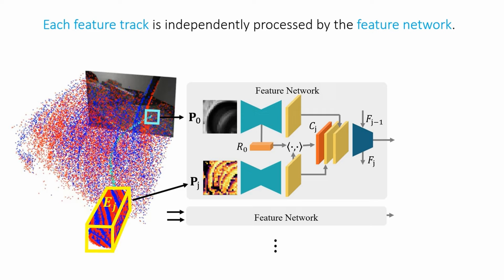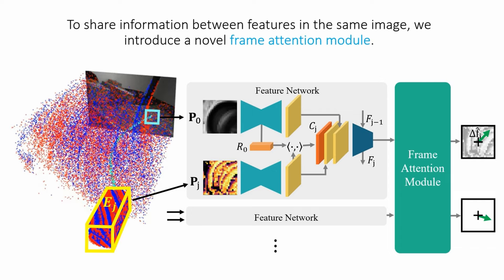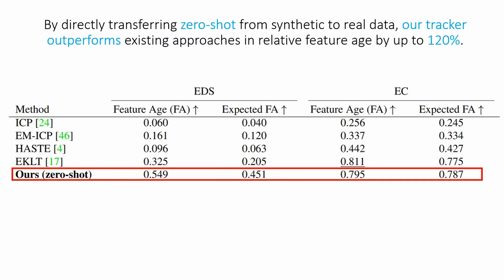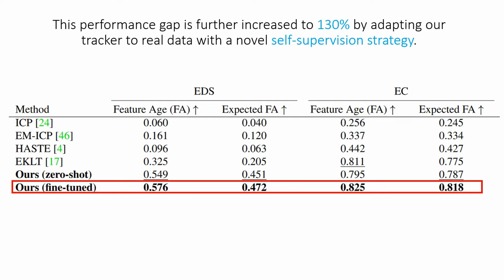To share information between feature tracks in the same image, we introduce a novel frame attention module. By directly transferring zero-shot from synthetic to the real data of the event camera dataset benchmark and the recently published EDS dataset, our tracker outperforms existing approaches in relative feature age by up to 120%. This performance gap is further increased to 130% by adapting our tracker to real data with our novel self-supervision strategy.